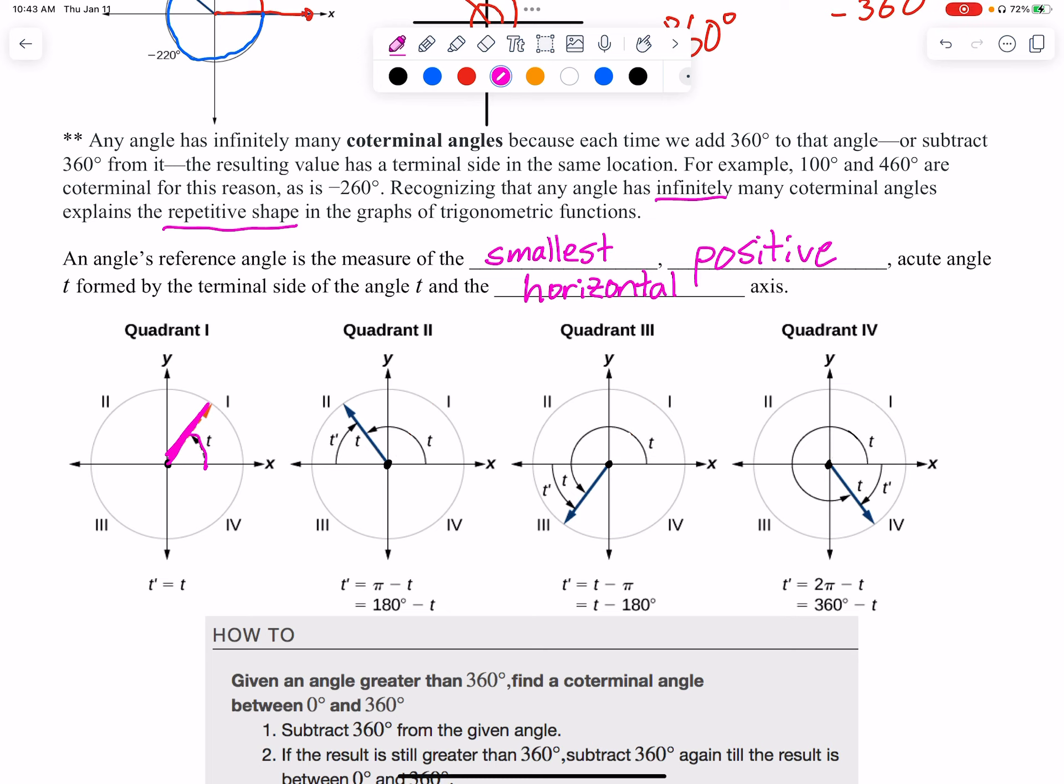Now, quadrant two, let's take a look at that. So I'm starting here with this angle, and its reference angle is this angle right here. It's made with the horizontal, and it's the smallest positive acute angle formed. So notice that the pink one goes, and it's like an obtuse angle, bigger than 90°. The blue one is acute, less than 90°.